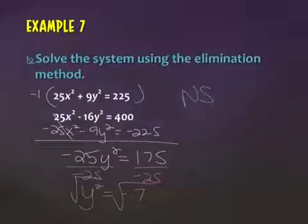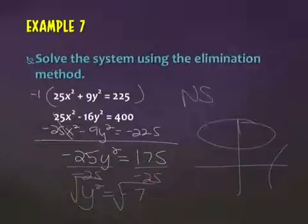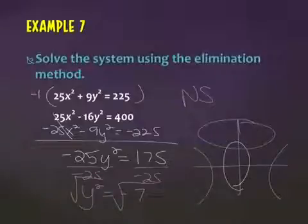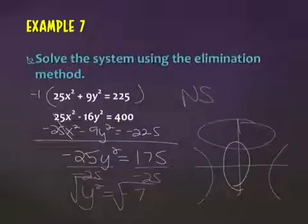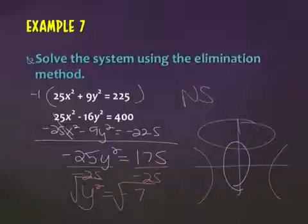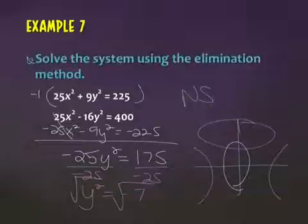This would probably be an ellipse and a hyperbola — you might have an ellipse up here and a hyperbola going this way that may never overlap, or an ellipse here and a hyperbola on the outside that may never overlap. So if you end up with x squared or y squared equal to a negative number and you go to square root it, it's no solution. If you solve for a variable and when solving for y you get a negative number under the square root, it's still no solution. Be careful.